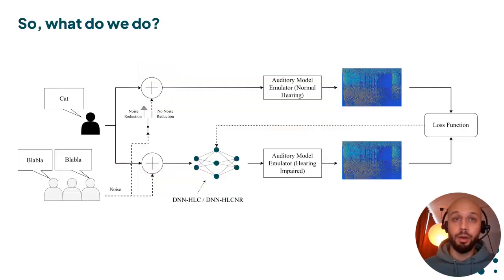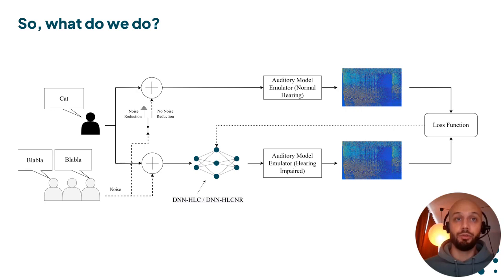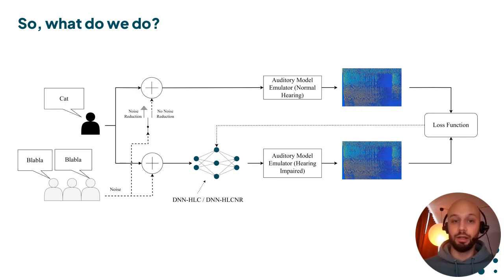However, because we are primarily interested in testing these systems in difficult and noisy conditions, we change the framework to include a realistic noisy source, which is by default added to both the upper and the lower branch. Thus, the task of the DNN becomes to minimize the difference between the two noisy physiological responses — we call the DNN derived this way DNN-HLC. We also train another DNN to additionally perform noise reduction by not feeding noise to the normal hearing auditory model. In this case, the task of the DNN becomes to match the noisy hearing impaired response with the clean normal hearing response, which we call DNN-HLC-NR.